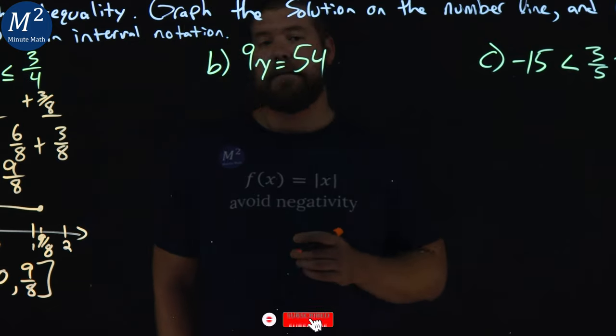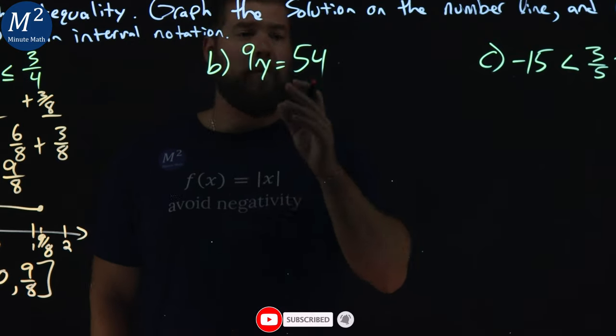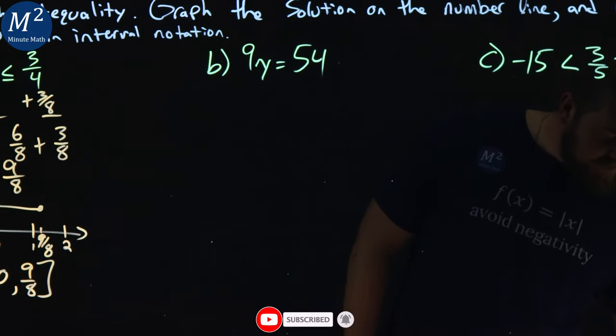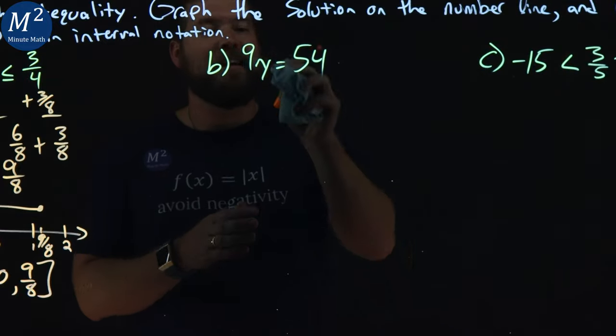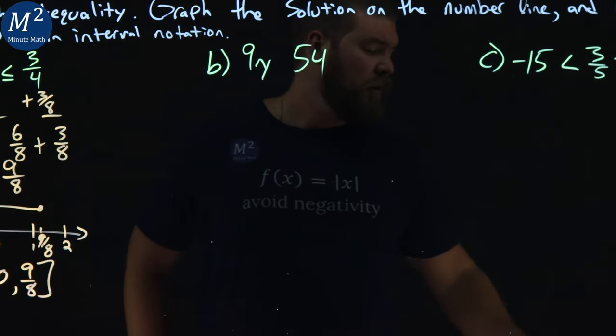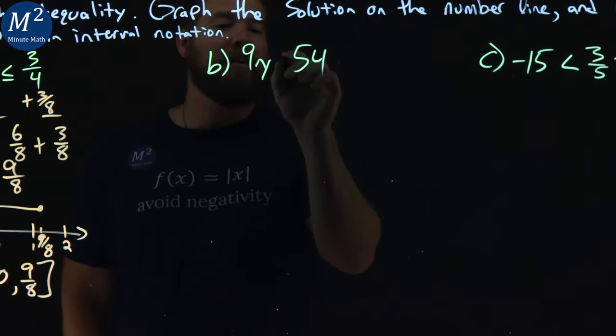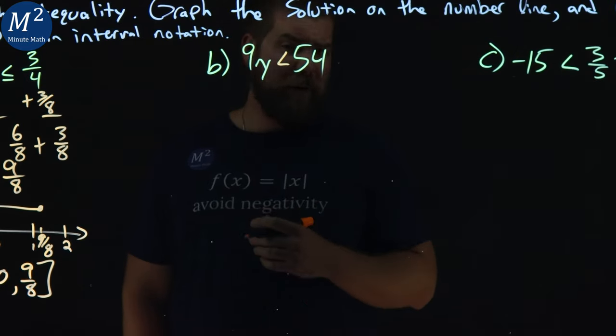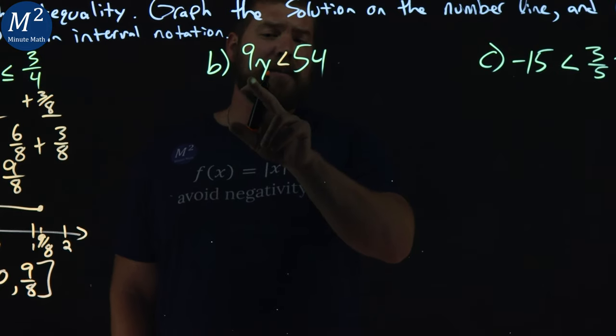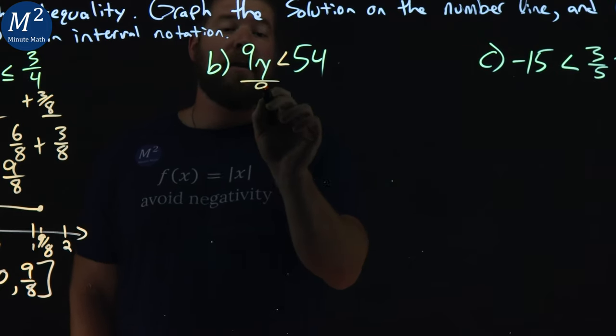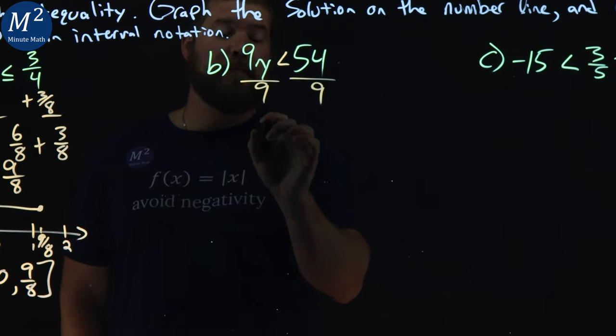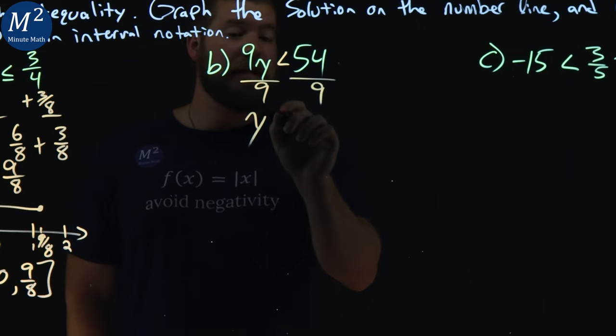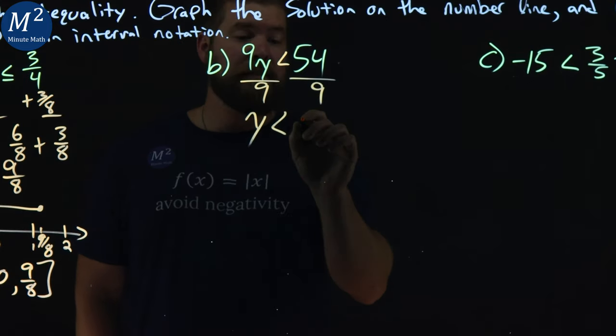All right, let's move on to the second example. We want to get y by itself, and it's a less than sign here. That's an inequality. To do this, I want to divide both sides by 9. Let's get y by itself. y here is less than 54 divided by 9 is 6. Not too bad.